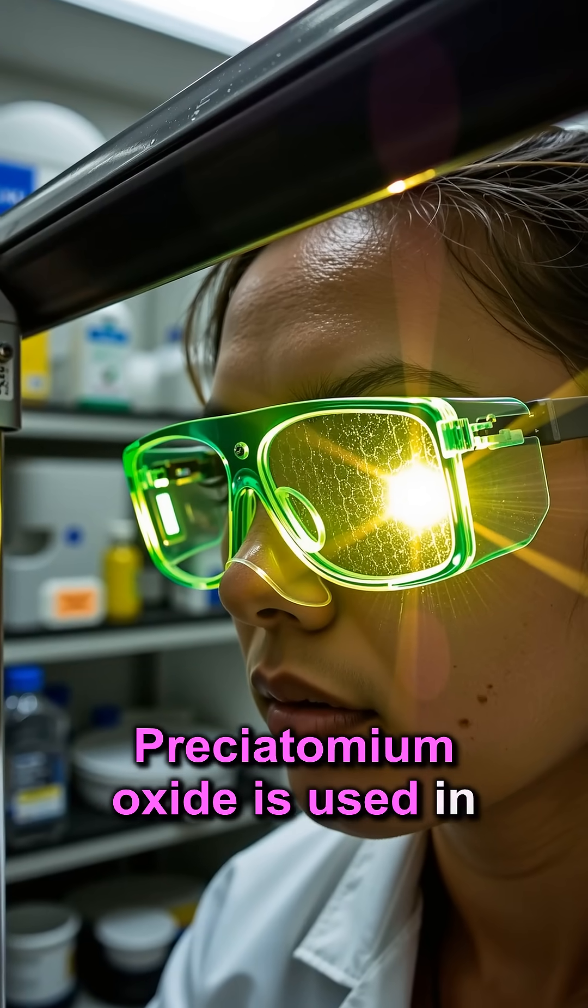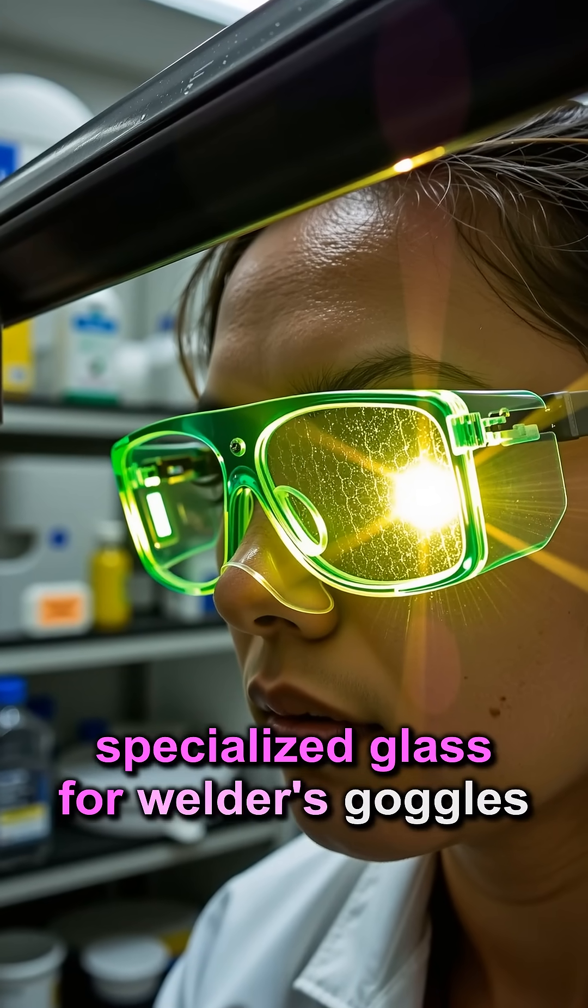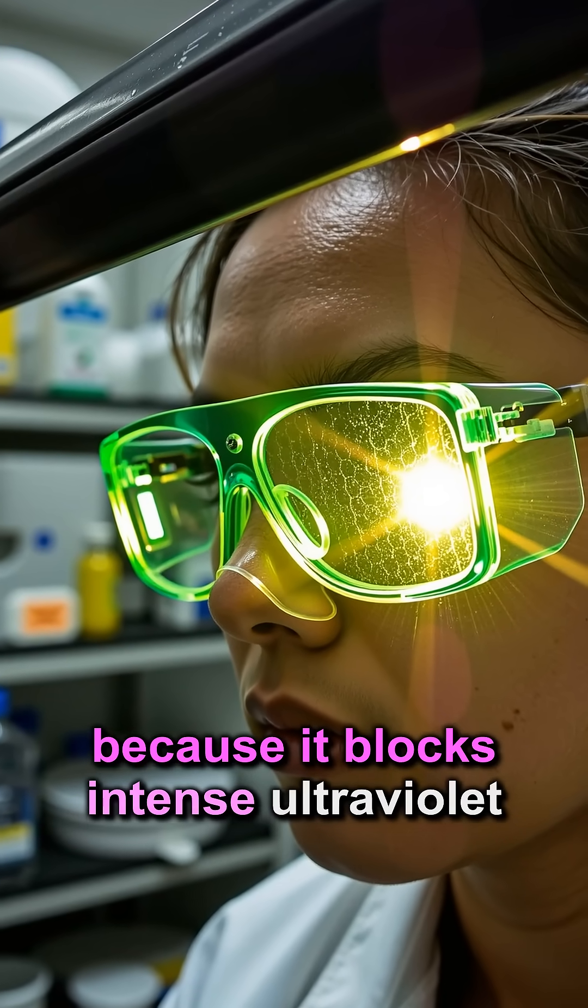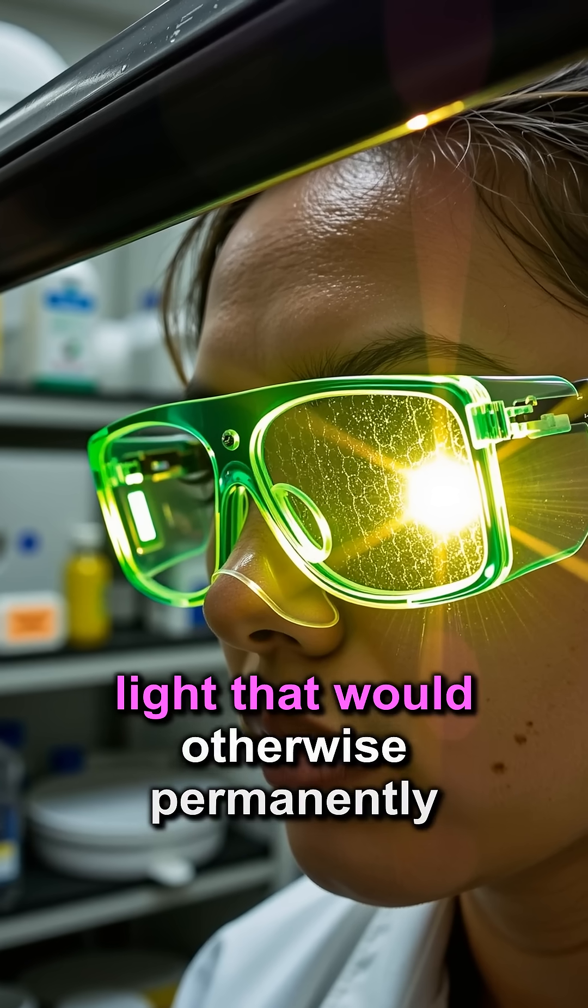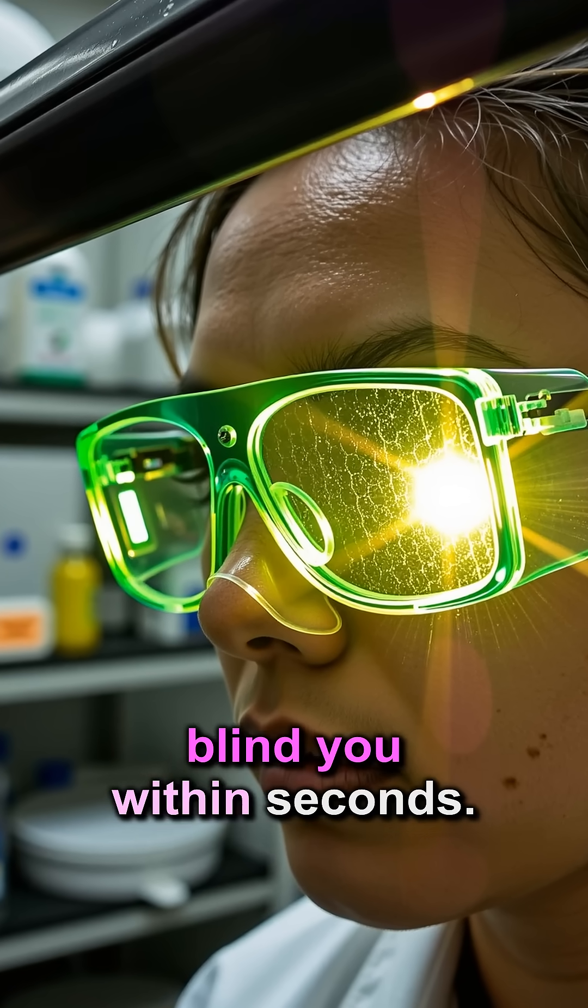Praseotomium oxide is used in specialized glass for welder's goggles because it blocks intense ultraviolet light that would otherwise permanently blind you within seconds.